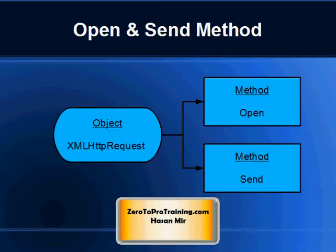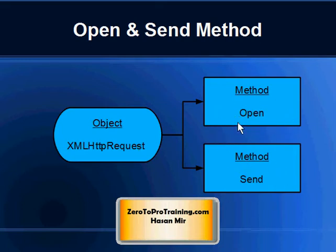There are two methods available in the XMLHttpRequest object to send an Ajax request from the browser to the server. The methods are Open and Send. The Open method establishes a connection with the server, and the Send method sends the request.